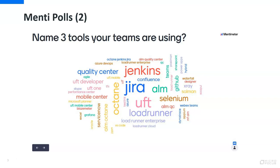The second survey we asked our attendees was to just name three tools their teams are using. The result we received is not a surprise — Jira is the tool used by many, many customers and companies. I don't know a single company that does not have Jira, and Jenkins is also very popular. We see the trend into Octane is growing, and Selenium from test automation is being used. UFT is also very popular, along with LoadRunner and LoadRunner Enterprise.